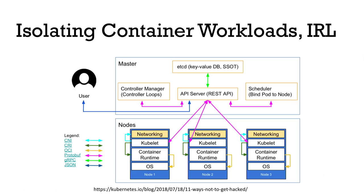With regards to isolating containerized workloads, here's an example of a Kubernetes cluster. In the top box we see the Kubernetes control plane — that includes things like the API server, etcd which is the key value store that backs the API, the scheduler, controller manager, and all the key components of the control plane. If you pop the control plane and get root to that, it's most often game over at that point.